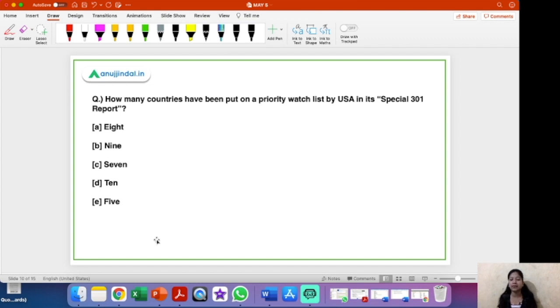So you have 8, 9, 7, 10, 5 in the options. Out of these 5 options the right answer is option B that is 9. A total number of 9 countries including India have been put on the priority watch list by USA in this special 301 report.